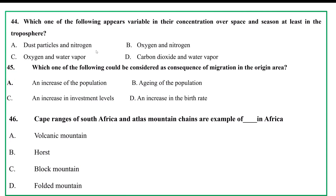Which of the following appears variable in their concentration over space and season, at least in the troposphere? A. Nitrogen and oxygen, B. Oxygen and nitrogen, C. Oxygen and water vapor, D. Carbon dioxide and water vapor.